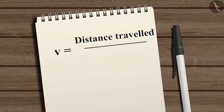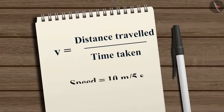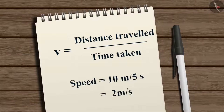The speed V of the object can be determined as V equals distance travelled divided by time taken. Speed equals 10 meters divided by 5 seconds, which equals 2 meters per second.